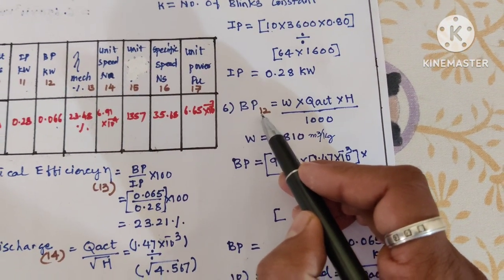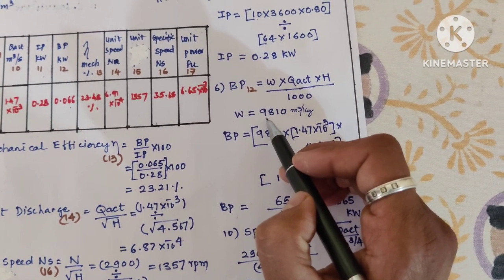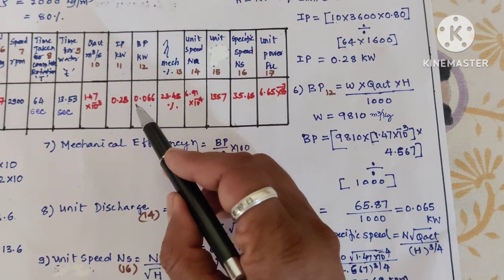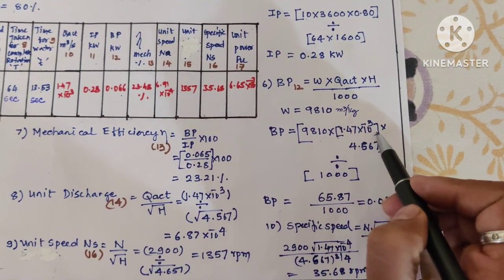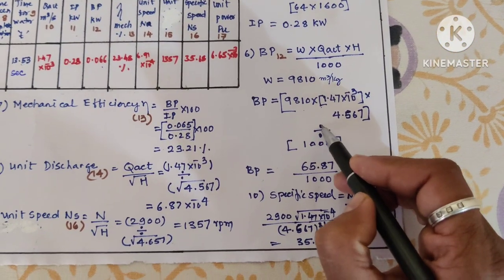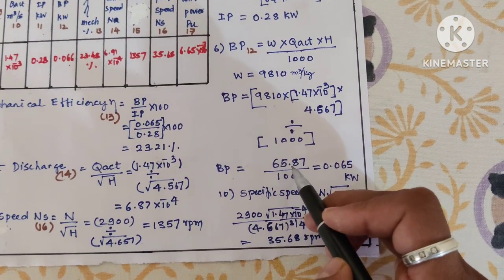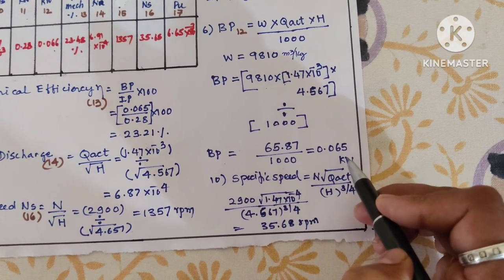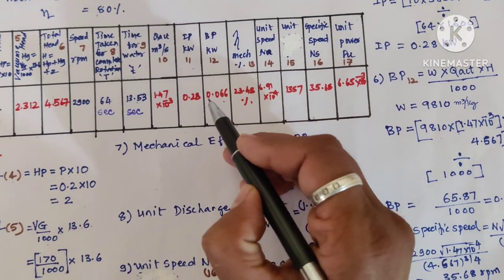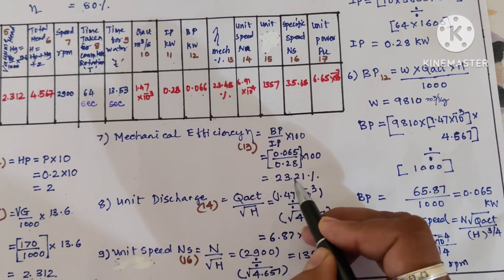Next calculation is BP. Formula is W × Q actual × H / 1000, where W is specific weight of water (9810 kg/m³). Substituting: 9810 × 1.47 × 10^-3 × 4.56 / 1000 = 65.87 / 1000 = 0.065 kilowatt. Mechanical efficiency is BP/IP × 100 = 0.065/0.028 × 100 = 23.21%.